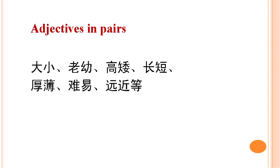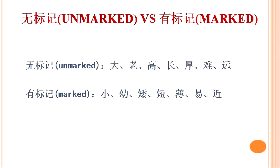Pairs of opposite adjectives include: 大/小, 老/幼, 高/矮, 长/短, 厚/薄, 难/易, 远/近, etc. Linguists name them unmarked and marked adjectives. The unmarked terms are: 大, 老, 高, 长, 厚, 难, 远. And the marked ones are: 小, 幼, 矮, 短, 薄, 易, 近.